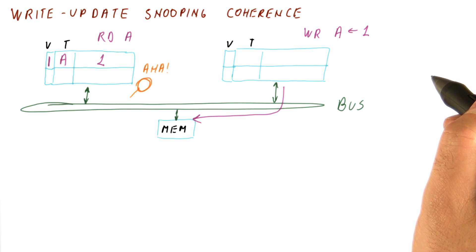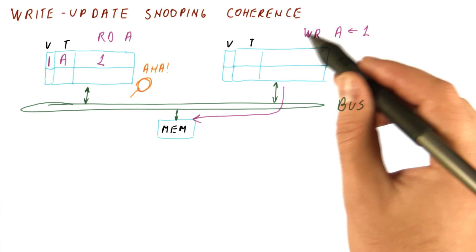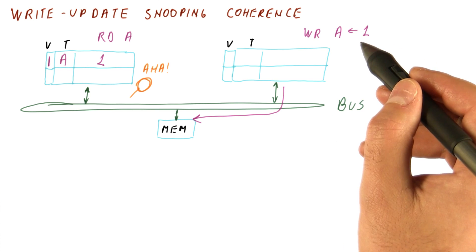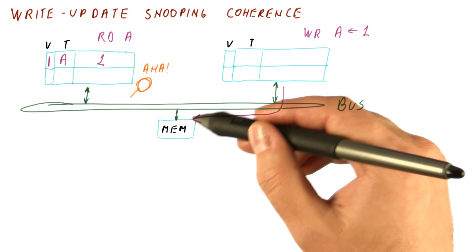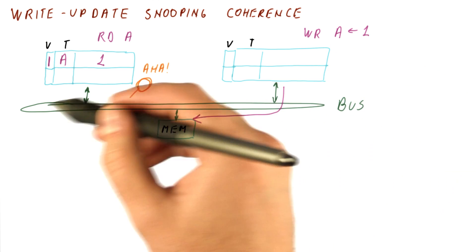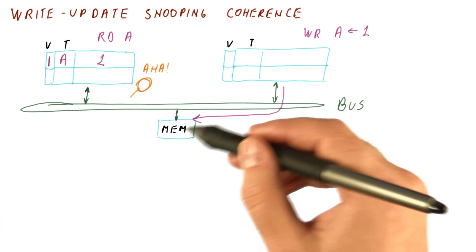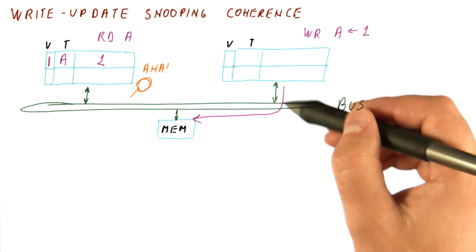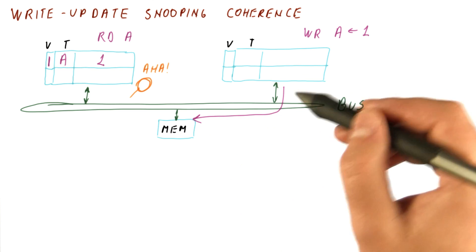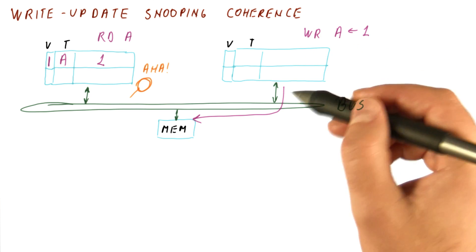If there are multiple cores, they cannot disagree about which write happened first and which one happened last, because all of the writes are sent through the bus, and because it's a single broadcast bus, it happens one at a time. So all of them see writes in exactly the same order, in the order in which writes got to the bus.